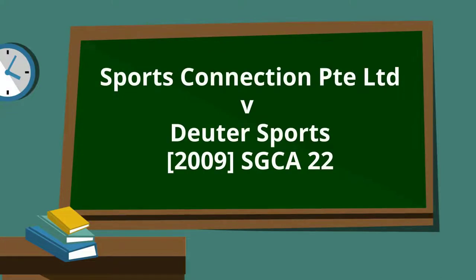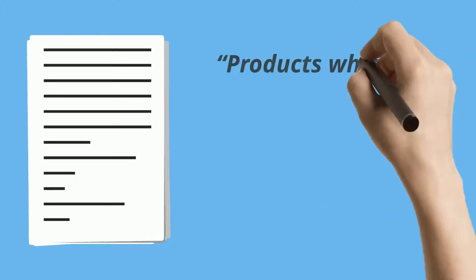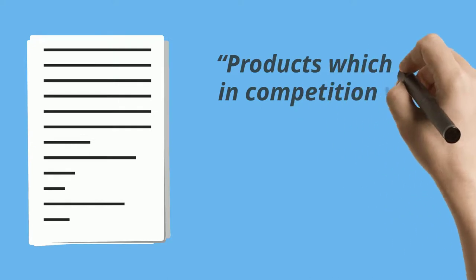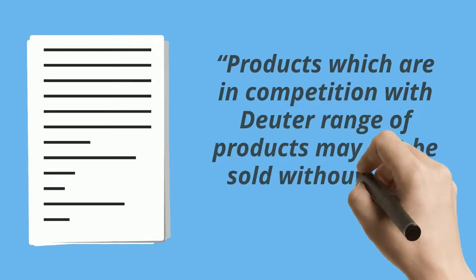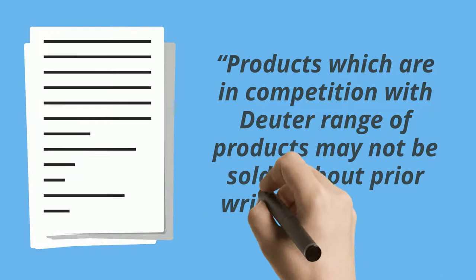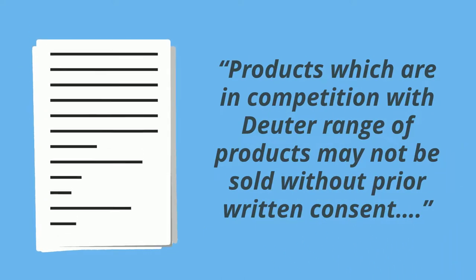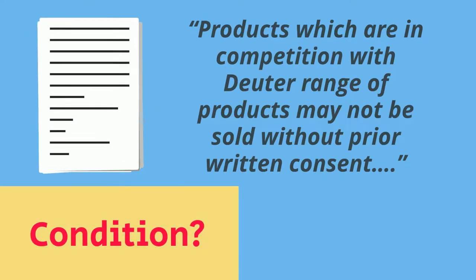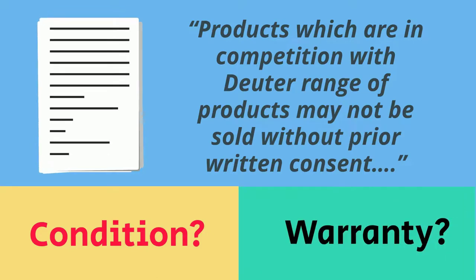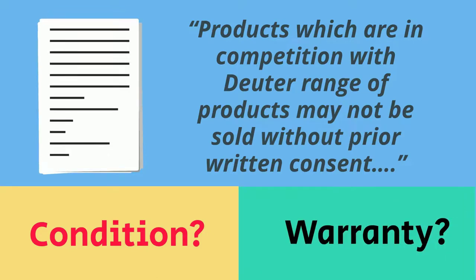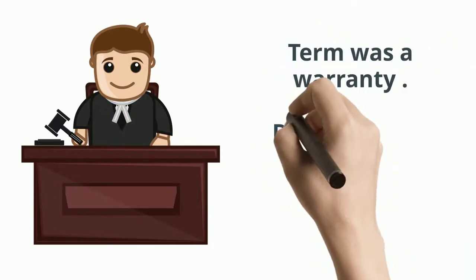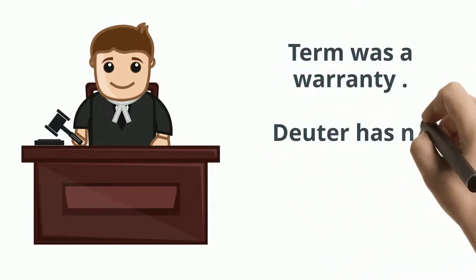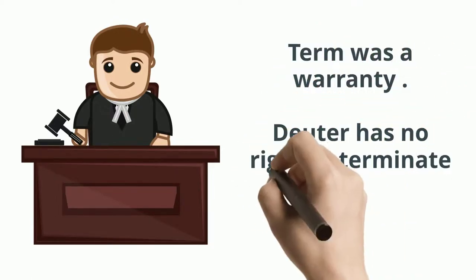In the Duter Sports case, there was a term that stated: products which are in competition with Duter's products may not be sold without prior written consent. The defendant breached that term and the issue was whether the breach was a breach of a condition or a warranty. The court held that the term was a warranty and Duter had no right to terminate the contract, even though it was breached by the other party.